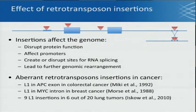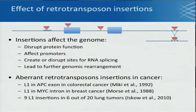There's episodic evidence of an L1 inserting into an APC exon early in colorectal cancer progression. There's also evidence for an L1 in a MYC intron affecting splicing in breast cancer. And more recently, a study from the Divine Lab found nine somatic L1 insertions in six out of 20 primary lung tumors using an experimental assay.